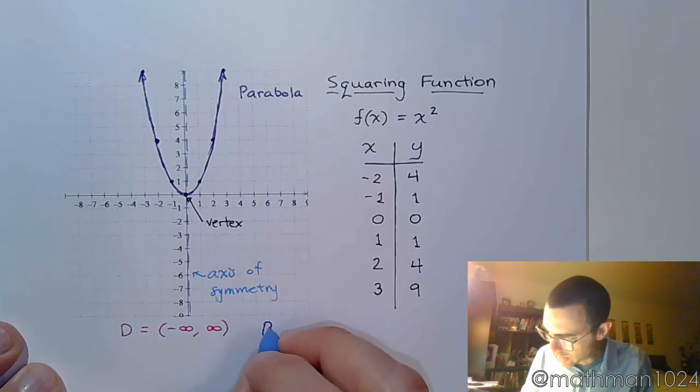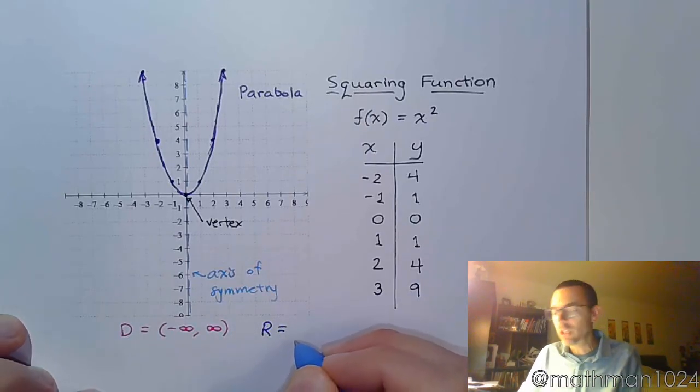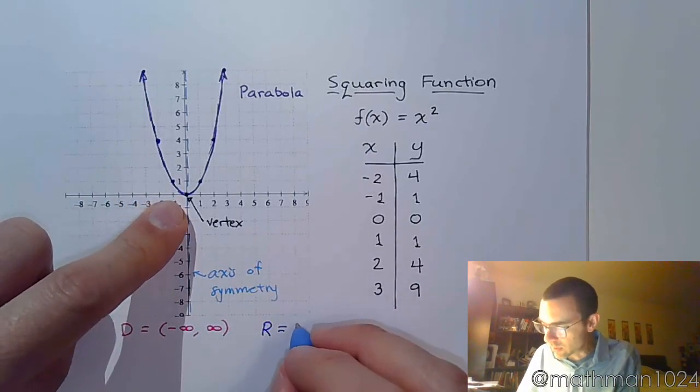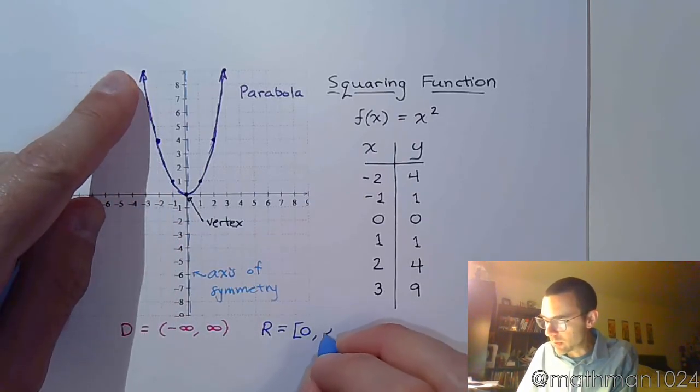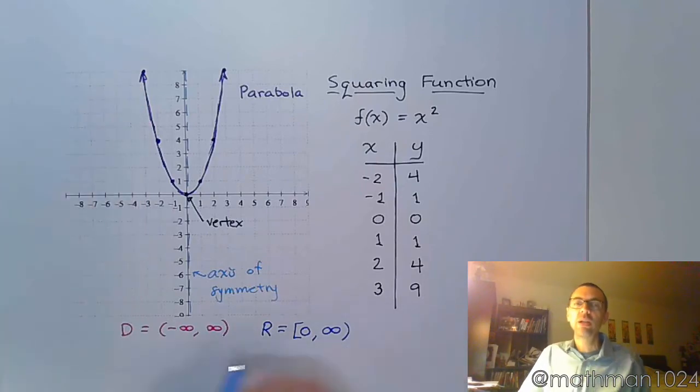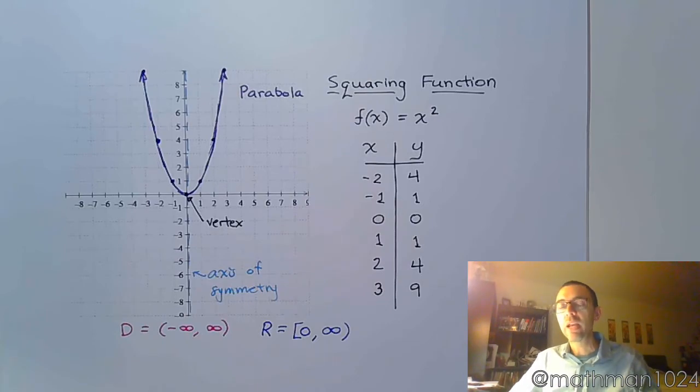Your range is not all real numbers. Because the lowest the graph gets is zero. So, it's bracket zero. And he goes all the way up without stopping on both sides to infinity. Okay. So, that is just a quick run through of the identity function and the squaring function. And let's see what other shapes we come across.